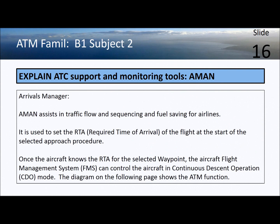AMAN — the arrivals manager — is an important tool for assisting ATC in creating an efficient flow of air traffic. It is used to set the arrival time of the aircraft at the start of the approach procedure near the end of their trip. Once the required time of arrival at the final en-route waypoint is given to the pilot, they can enter it into the FMS and the aircraft will fly itself at the correct speed to achieve that target, maintaining the flow of traffic.